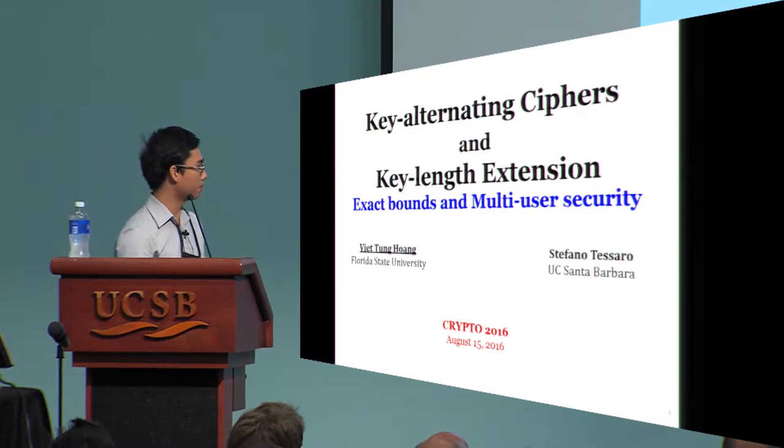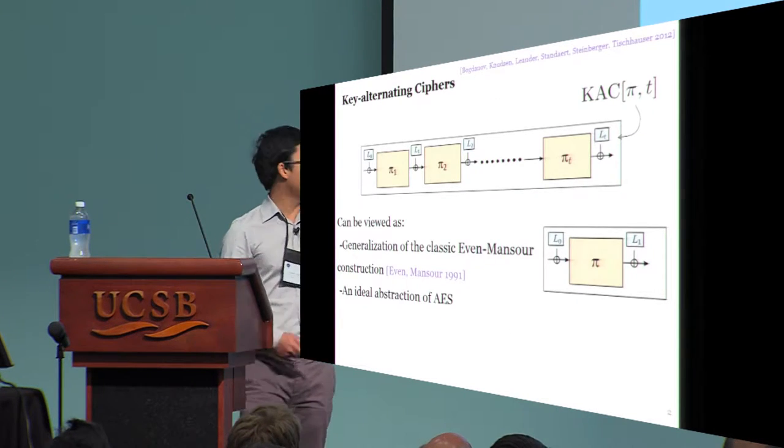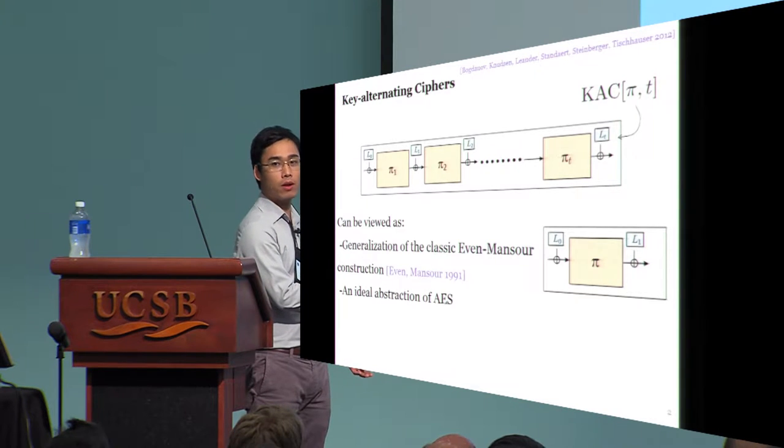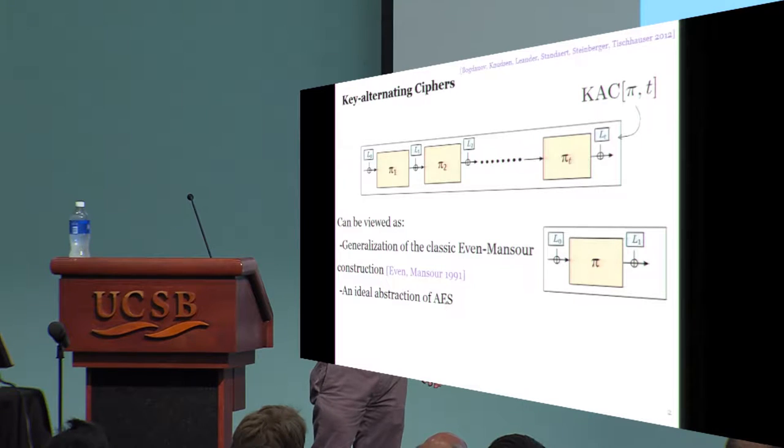Thank you Vats for the introduction. So you all know the classic Even-Mansour block cipher construction, which is built on top of a public random permutation pi, and uses two sub-keys, L0 and L1.